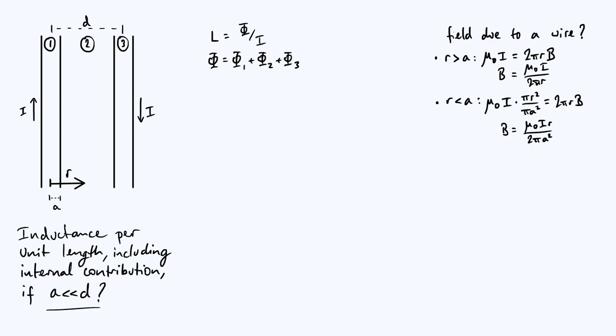Let's proceed and start doing some integration. The easiest region to start with is region 2, so let's find φ₂, the flux linkage due to region 2.